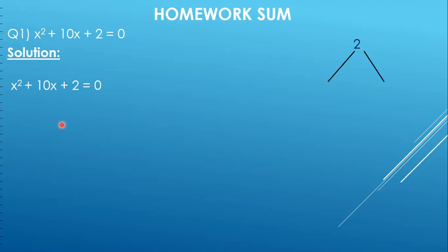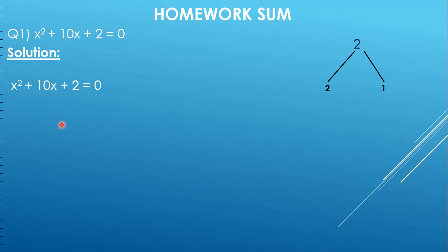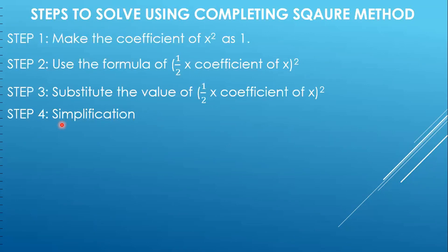Before we move on to the solution, let us first take a look at the steps of how to solve using the completing square method. There are 4 steps. The first step is that we have to make the coefficient of x squared as 1. This is the most important step — if you solve the whole question properly but didn't make the coefficient 1 at the beginning, you will get the wrong answer.